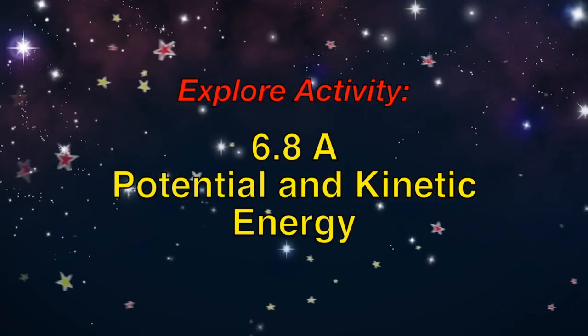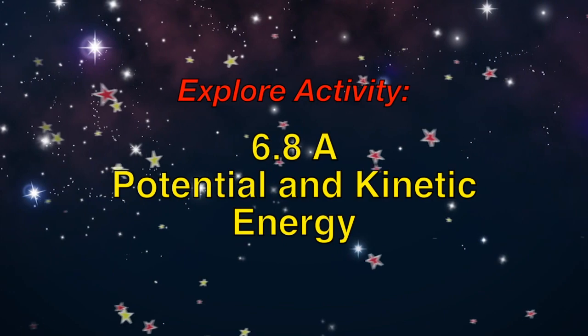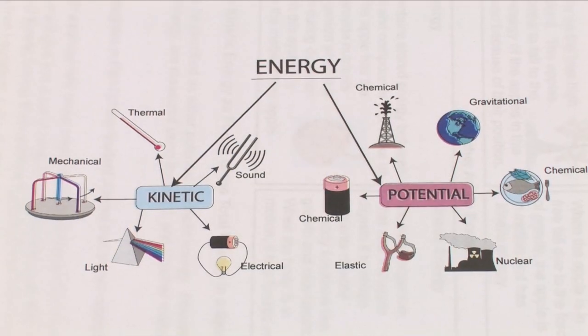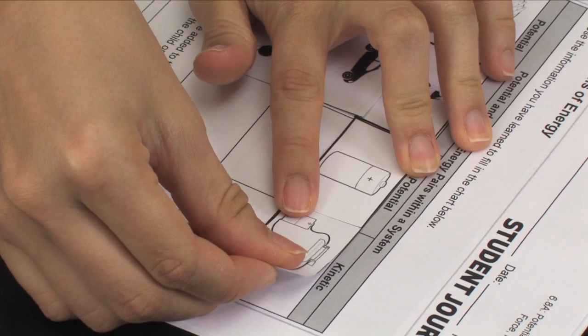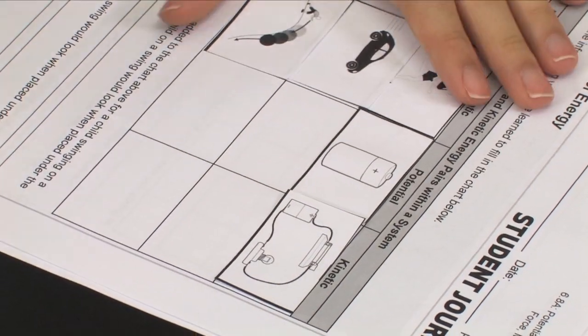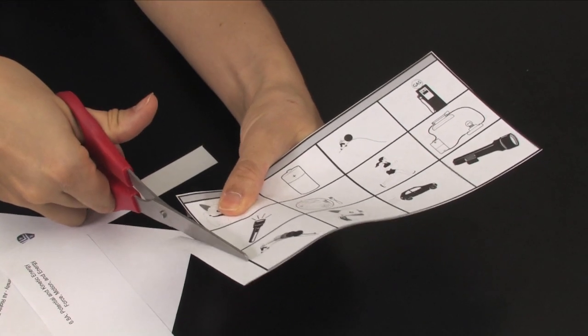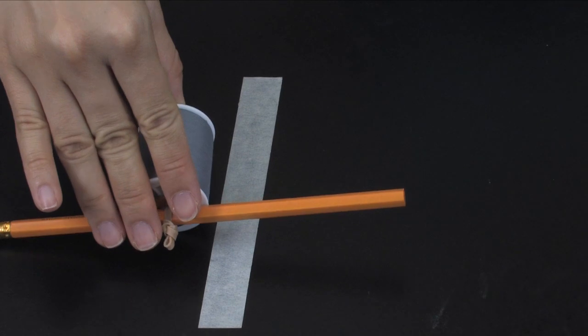6.8a Potential and Kinetic Energy. In this three-part activity, students actively compare and contrast potential and kinetic energy through a card sort, picture interpretation, and a spool racer activity.